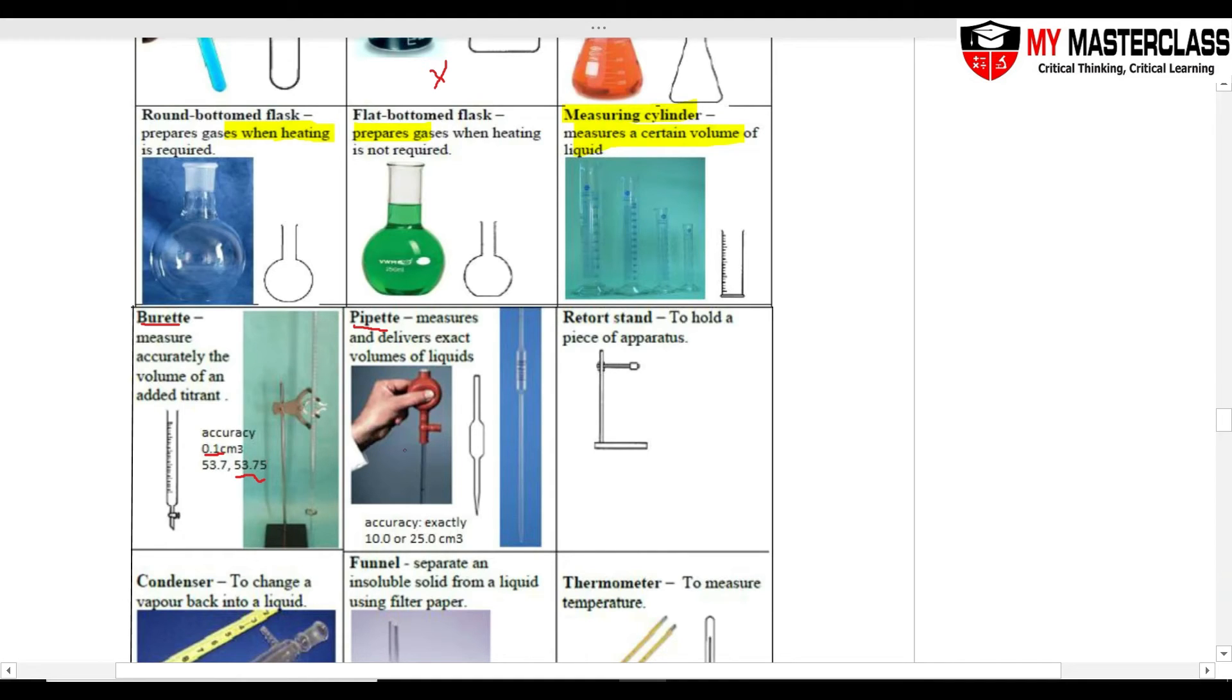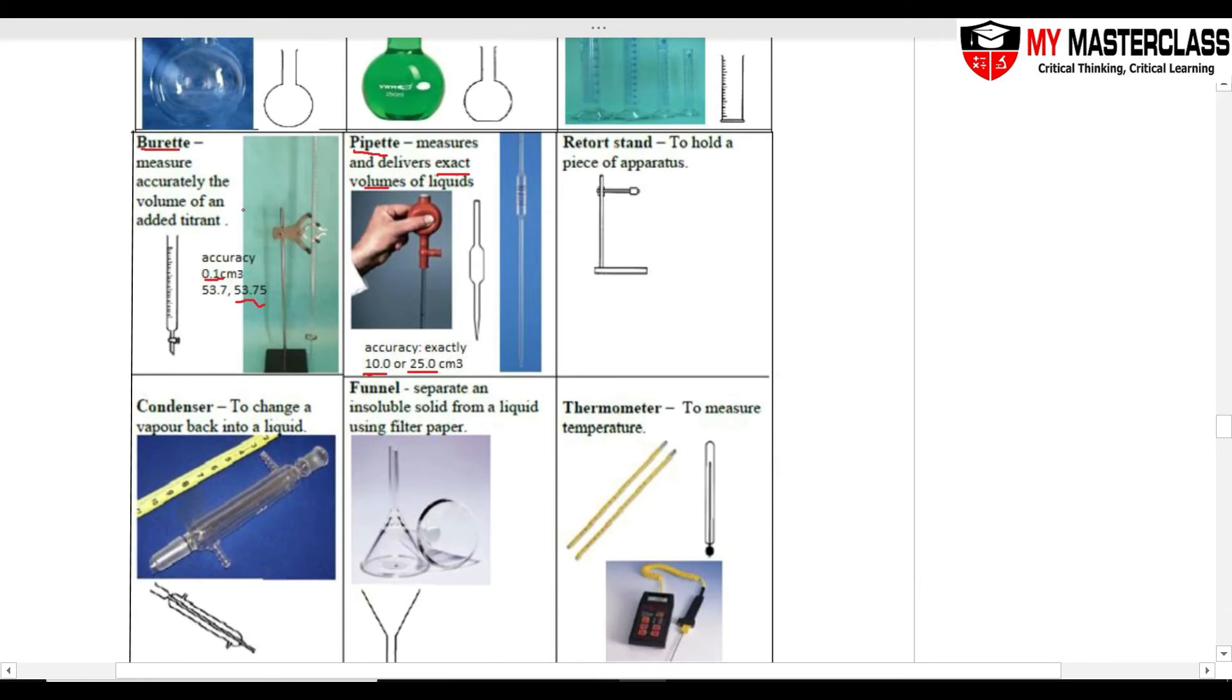Pipette, this one delivers exact volume. So exact volume, especially in multiples of 5, 10.0, 25.0, use the pipette. These two apparatus, you're going to use it a little bit more in upper sec.